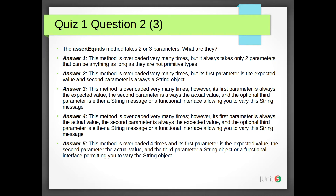Answer 4: This method is overloaded very many times. However, its first parameter is always the actual value, the second parameter is always the expected value, and the optional third parameter is either a String message or a functional interface allowing you to vary the String message.